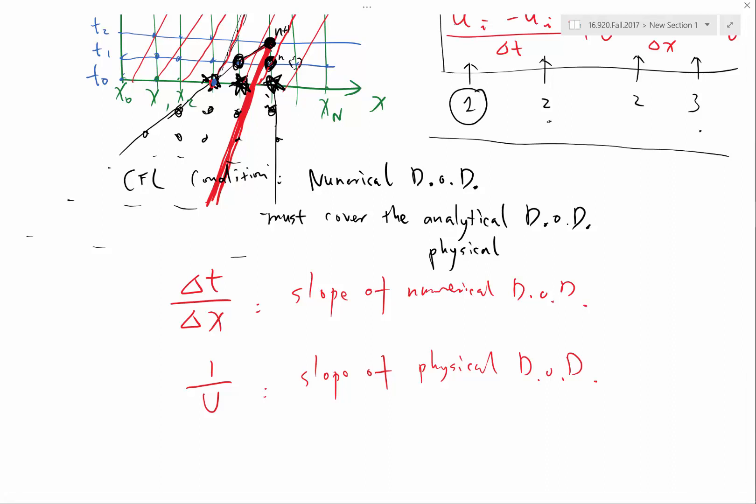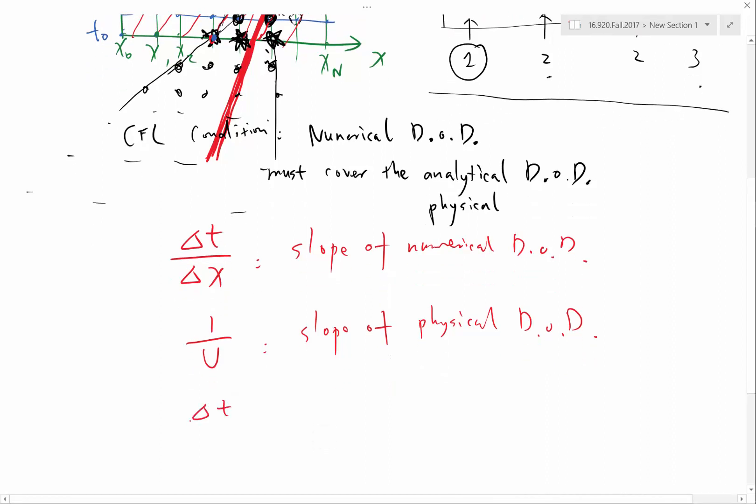So the numerical domain of dependence has to include the physical domain of dependence, which means the numerical domain of dependence has to be shallower, right? So Δt/Δx has to be less or equal to the magnitude of 1/U, which means Δt has to be less or equal to Δx over magnitude of U.